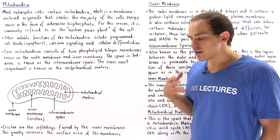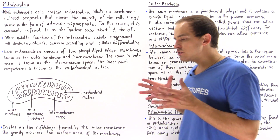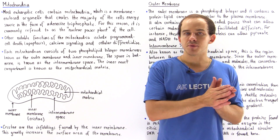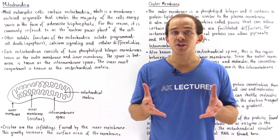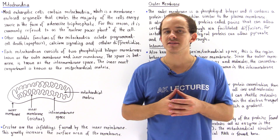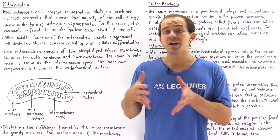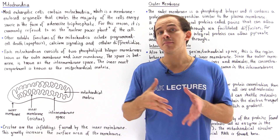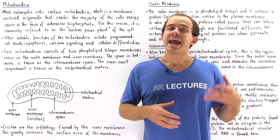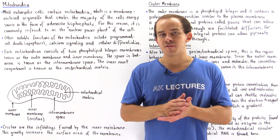Mitochondria are membrane-enclosed organelles that are responsible for forming the majority of the energy used by the cell. Cells form energy in the form of chemical molecules known as ATP, or adenosine triphosphate.